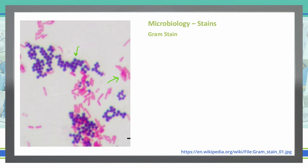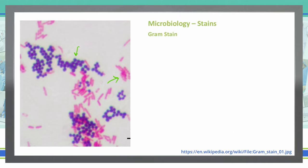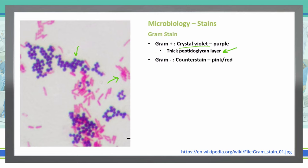This occurs because of the peptidoglycan layer and the outer cell wall present in gram positive and gram negative bacteria, respectively. We stain the gram positive with crystal violet, and that stain causes it to turn purple by embedding itself within that thick peptidoglycan layer. We then wash that stain away and counter-stain with a pink-red stain, which gives gram negative bacteria their pink-red color, since they don't take up the original crystal violet stain.